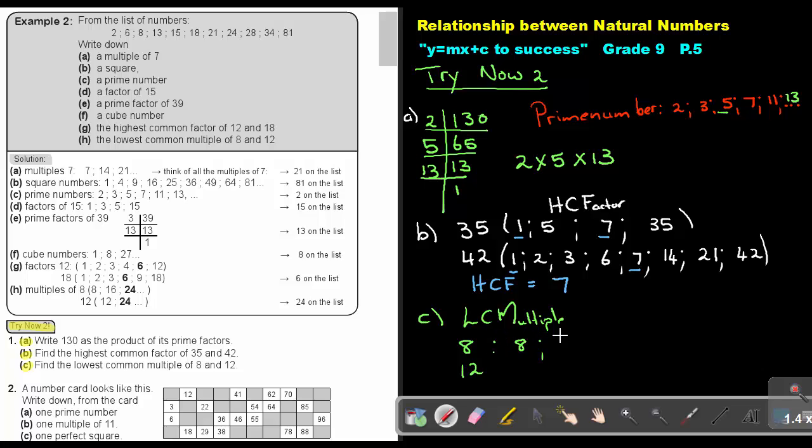Write the multiples of 8: 8, 16, 24, 32. Sometimes you stop and start with the other. Multiples of 12: 12, 24, 36. Can you see the lowest? 24 is the lowest common one. So the lowest common multiple is 24.